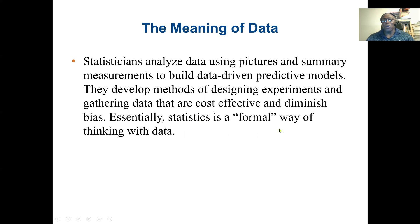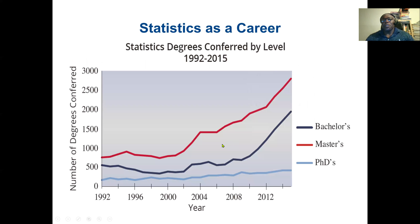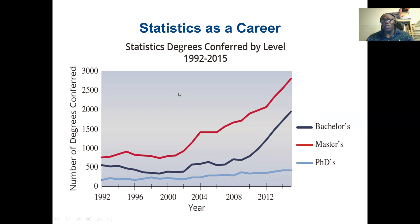Statistics is a formal way of thinking with data. Looking at an example graph, we can see how statistics has become more popular from 1992 to 2015. Those with a PhD didn't grow too much, but there's a little increase. The master's degree graduates have grown almost exponentially, because statistician skills are needed in many organizations.